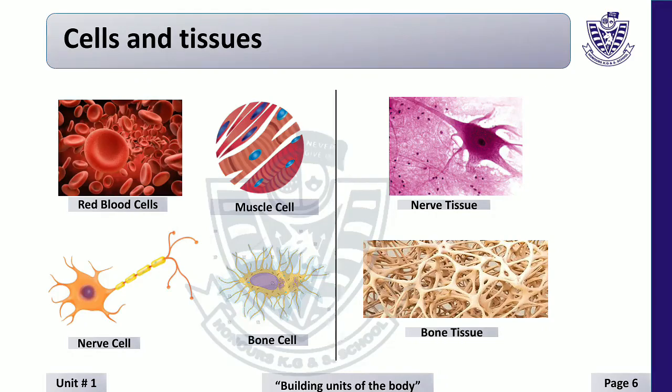Students, this is a nerve cell, and when they work together to form a group, they become tissues. This is a bone cell, and when they work together to form a group, they become bone tissues.